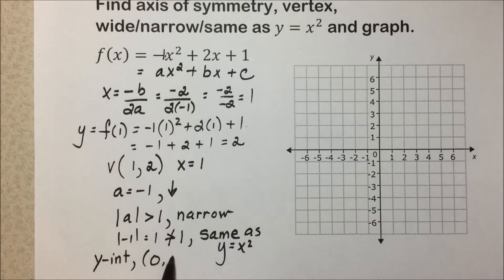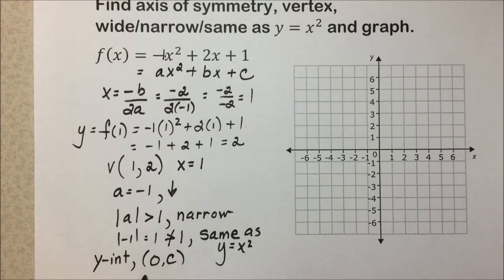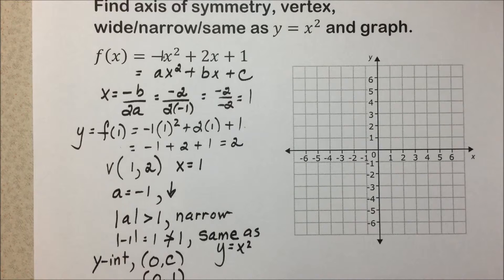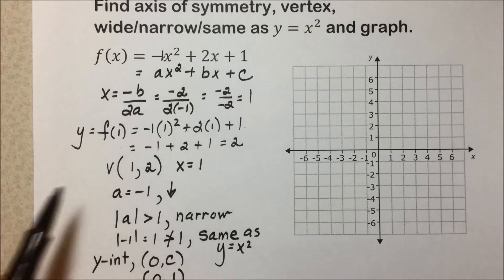A very easy point to find is the y-intercept, which generically is the coordinate (0, c). And on this quadratic function, c was 1. So we have the point (0, 1).